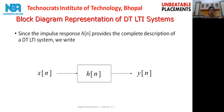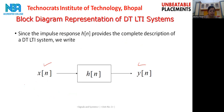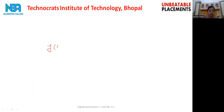We have a system to which we apply input xn and it gives output yn. We have represented xn as the summation of weighted impulse responses: xn equals summation from k equals minus infinity to infinity of xk·δ(n−k). This signal xn is applied as input to a system whose impulse response is hn, and it gives output yn. So the output yn is the transformation of whatever signal xn we applied.